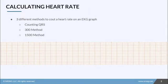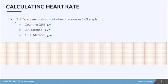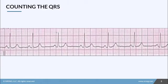In this lesson we're going to talk about how to calculate a heart rate on an EKG strip. I'm going to show you three different methods: counting the QRS, the 300 method, and the 1500 method. I know this sounds complicated, but I promise it's really simple — you're all going to be pros by the time we get through it.